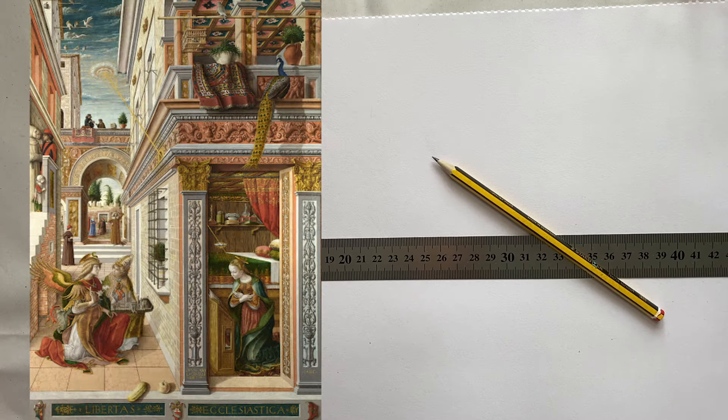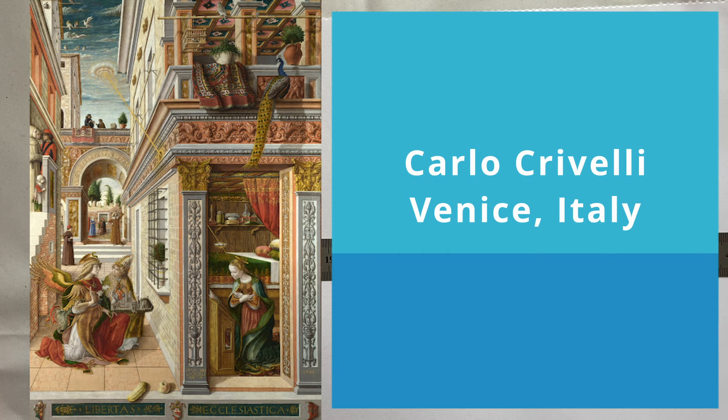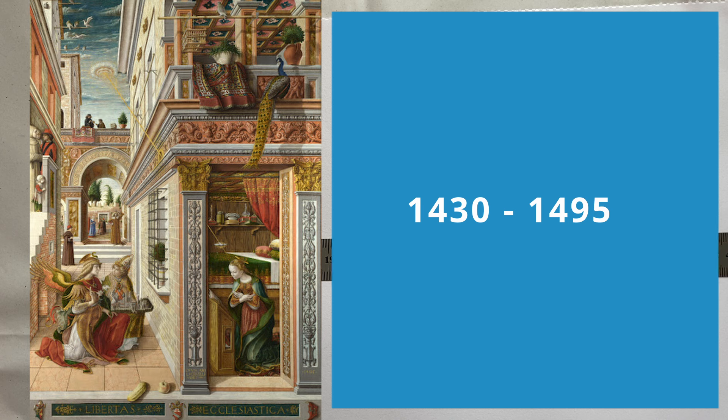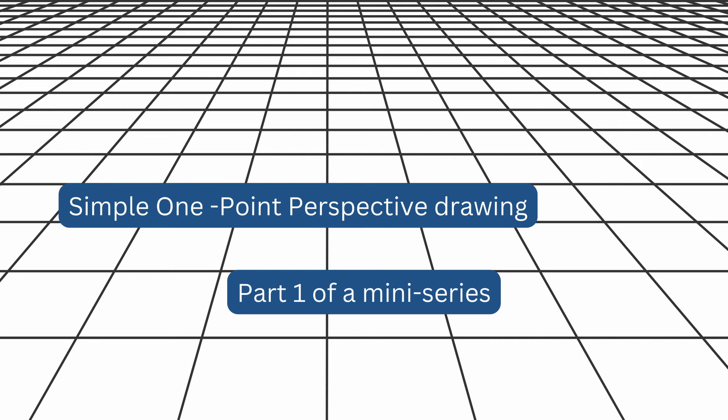Looking at the work of artists like Carlo Crivelli or Piero della Francesca, we can see this idea of depth and illusion — that is perspective. It can look really quite complicated, but the starting points are very basic, and that is what we're going to do in this first part of a series of drawing tutorials on how to use one, two, and three point perspective in your drawings.